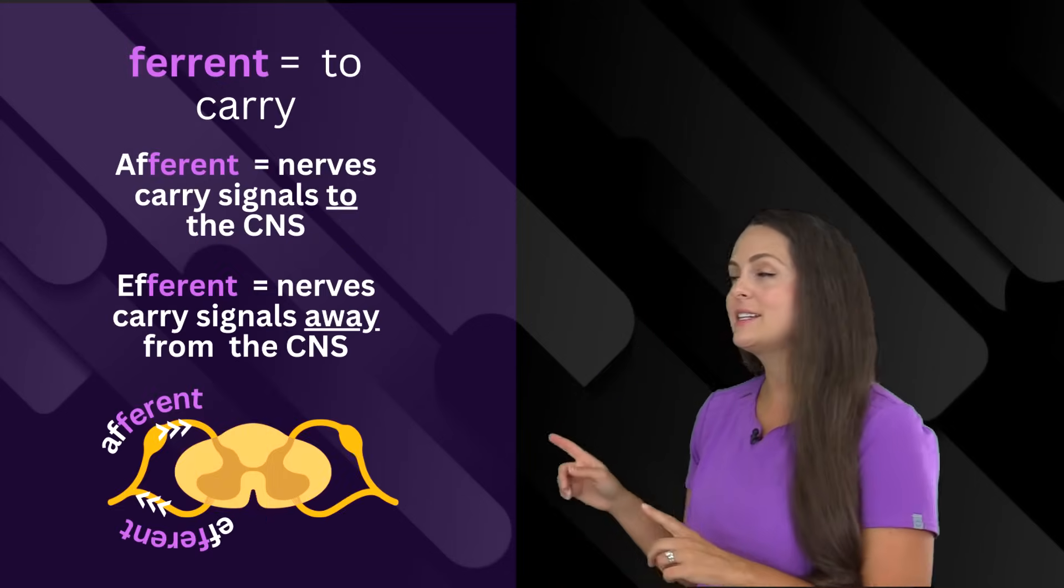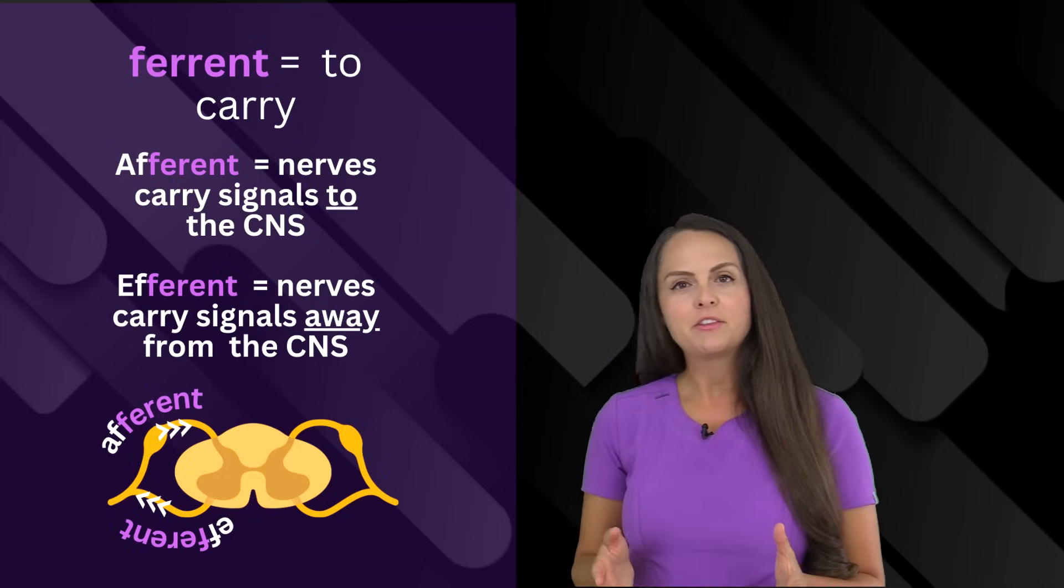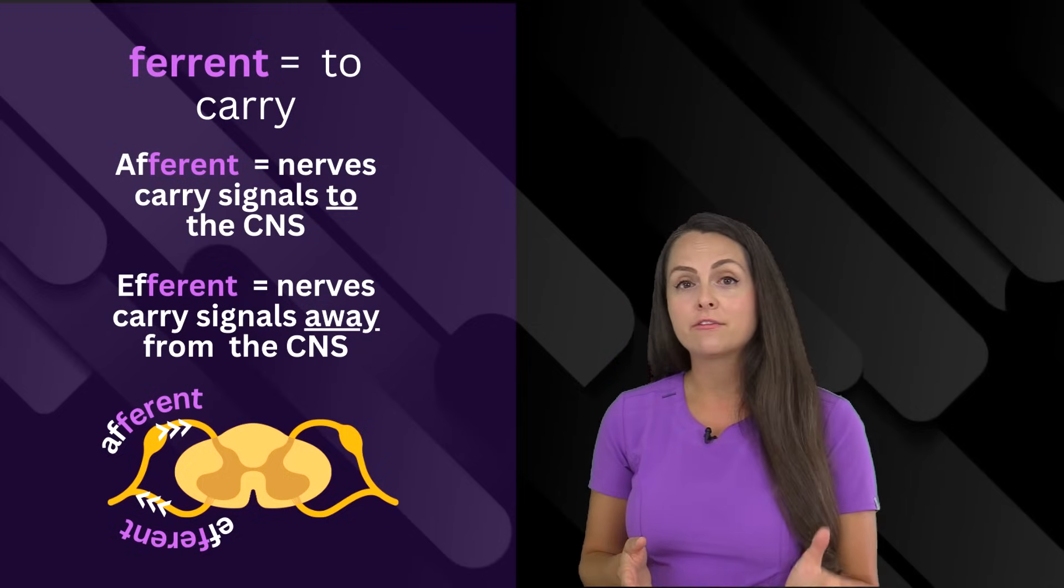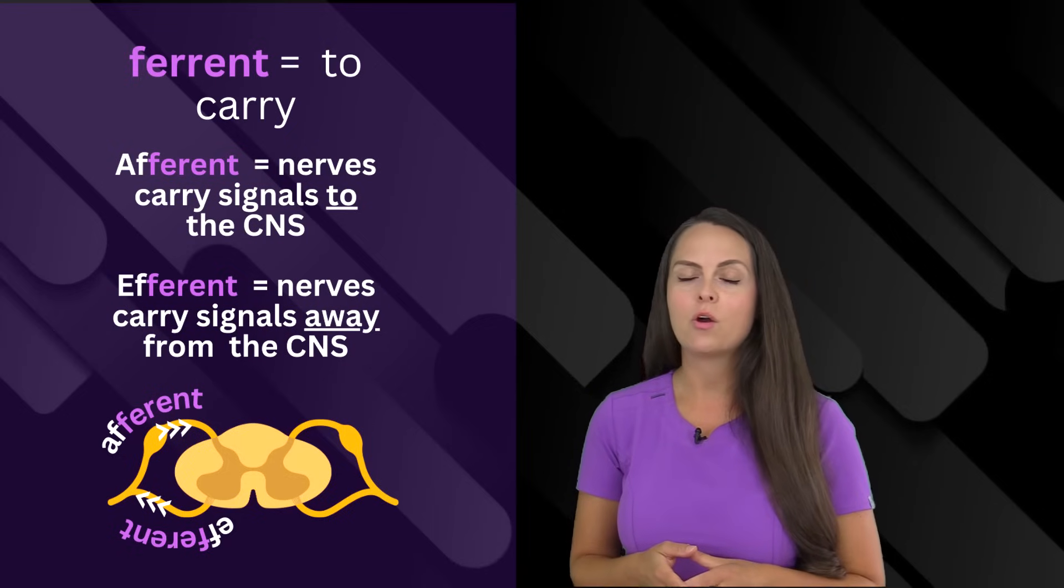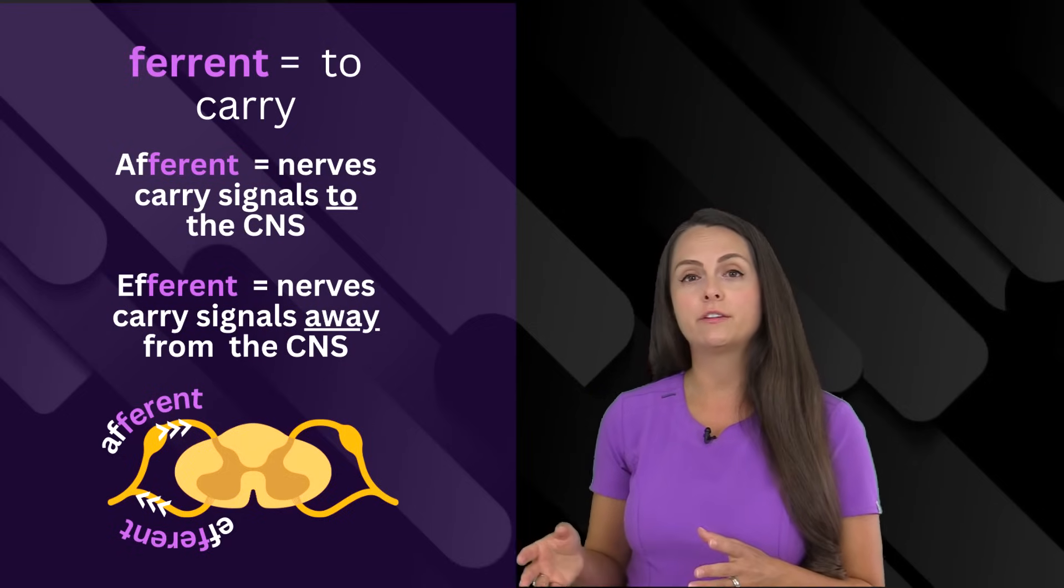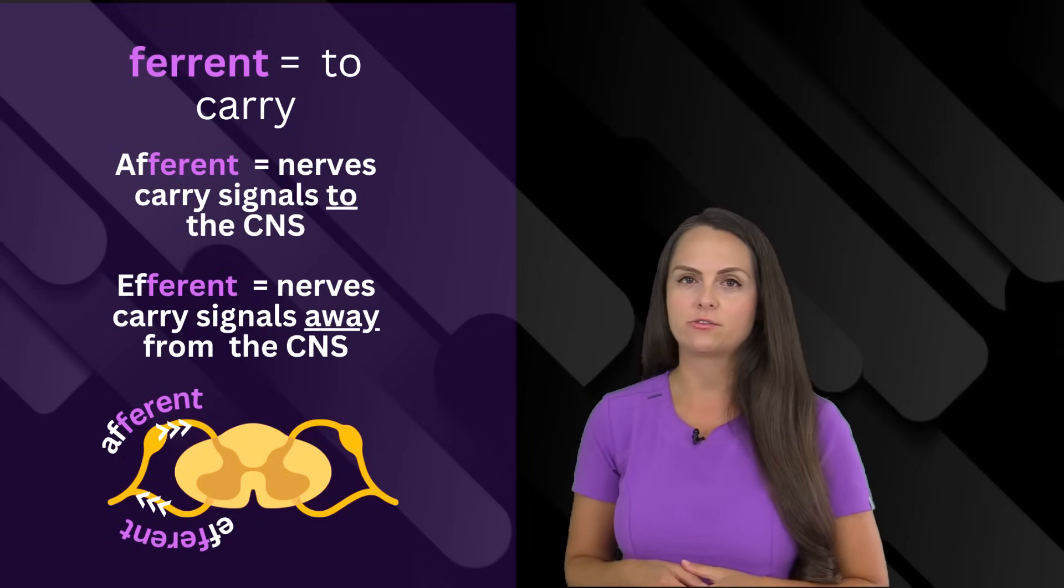Next is ferent. This means to carry. When we're talking about the nervous system, we can talk about afferent nerves, which carry signals to the central nervous system. Or we can talk about efferent nerves, which carry signals away from the central nervous system.